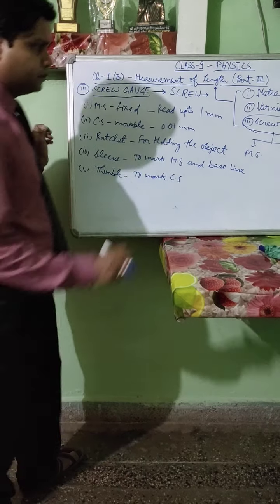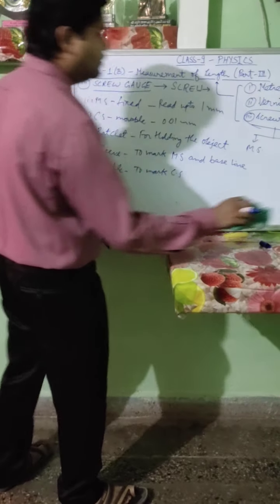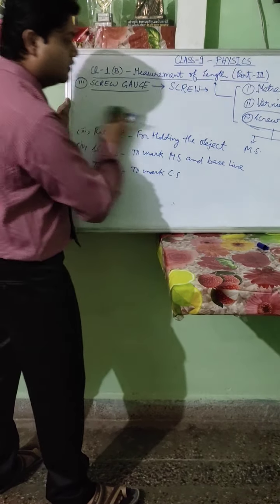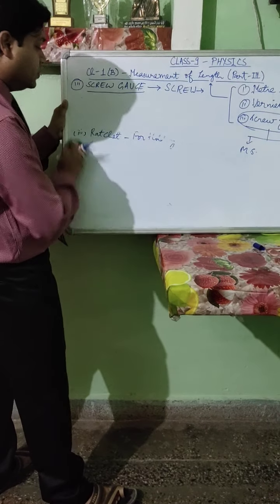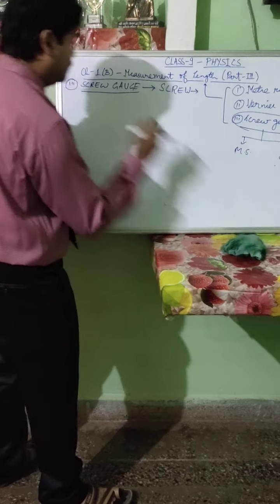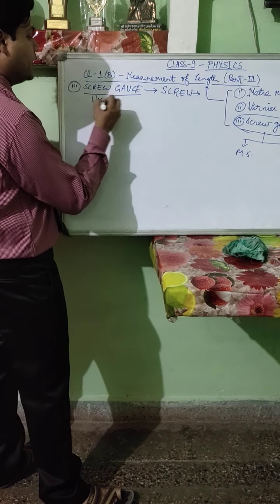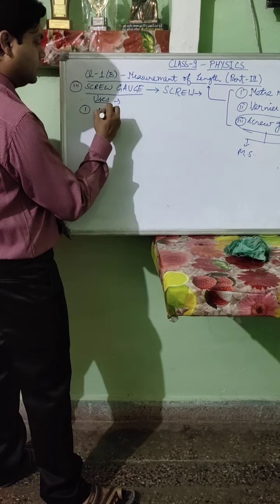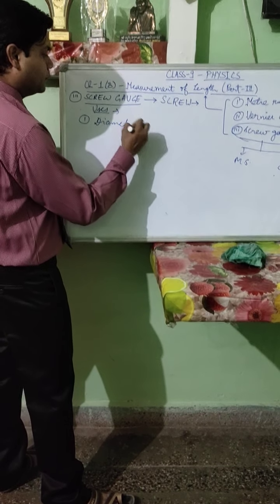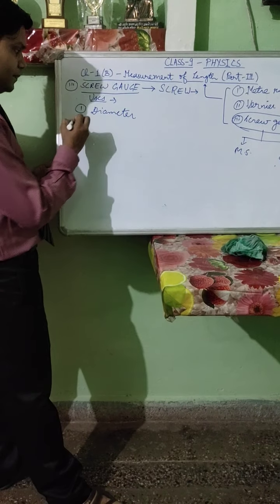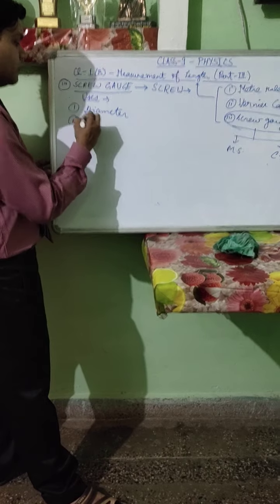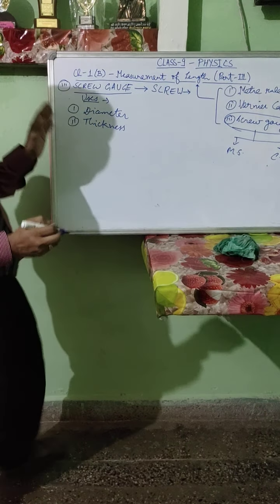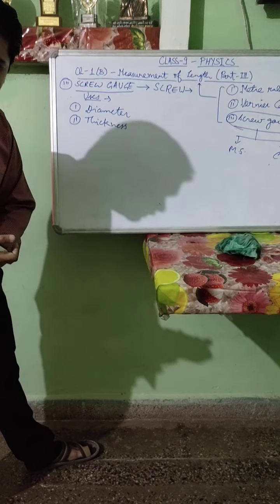You have to learn the parts and their functions as they may be asked in exams. Screw gauge is mainly used for measuring the diameter of a wire, the diameter of a paper, or the thickness of paper.